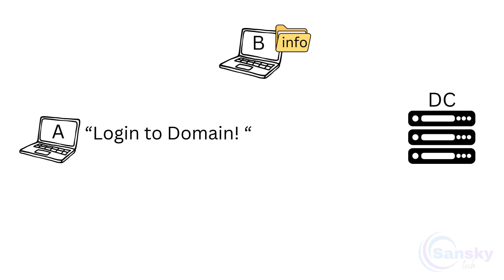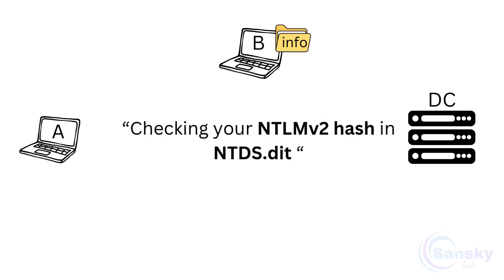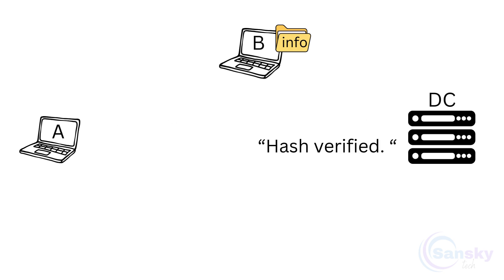The DC then checks its NTDS file, which is a really important file that stores Active Directory data, including user account information and password hashes, to find the NTLMV2 hash associated with A's login credentials. This is a security check to verify if A is who it claims to be. The DC confirms the NTLMV2 hash matches and verifies the hash.